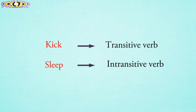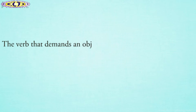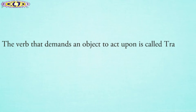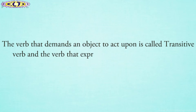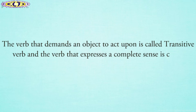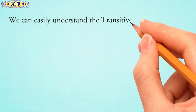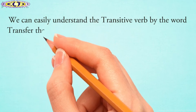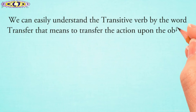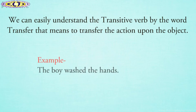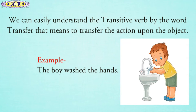We can understand transitive and intransitive verb like this: the verb that demands an object to act upon is called a transitive verb, and the verb that expresses a complete meaning without an object is called an intransitive verb. We can easily understand the transitive verb by the word 'transfer' — that means to transfer the action upon the object. For example: the boy washed the hands. Here, the object of this sentence is 'hands', upon which the action is to be done.